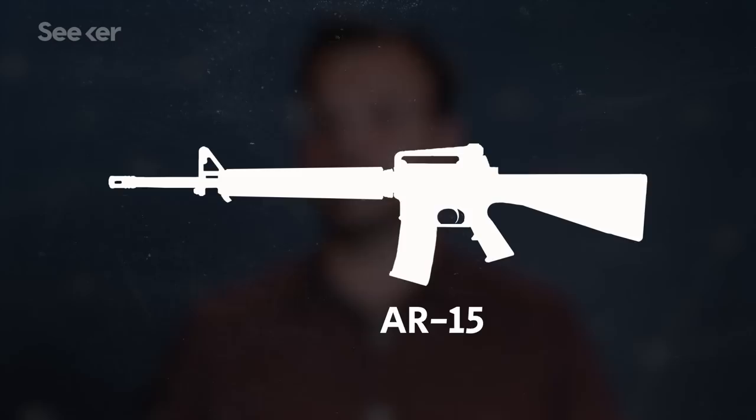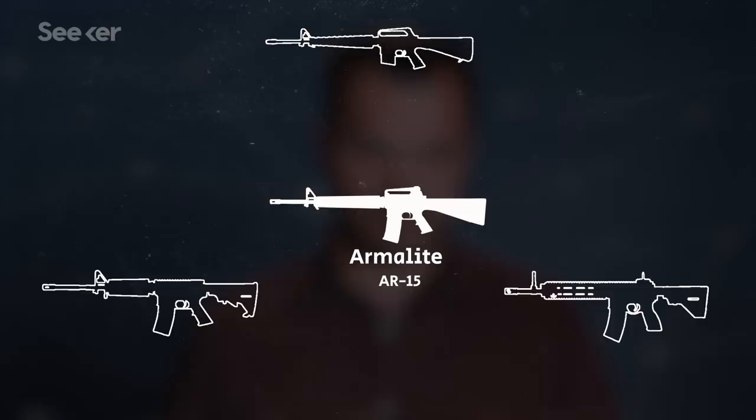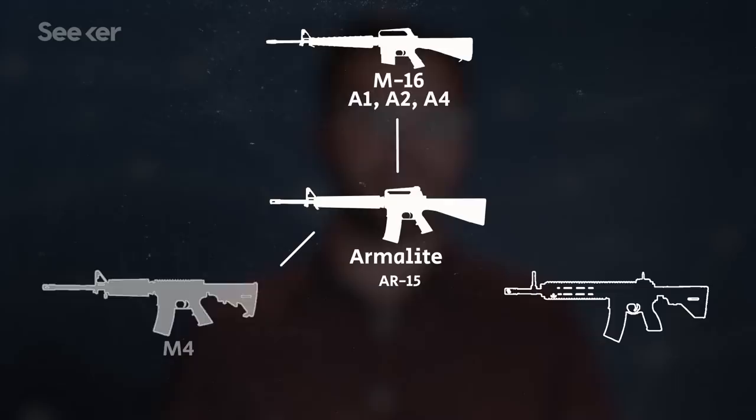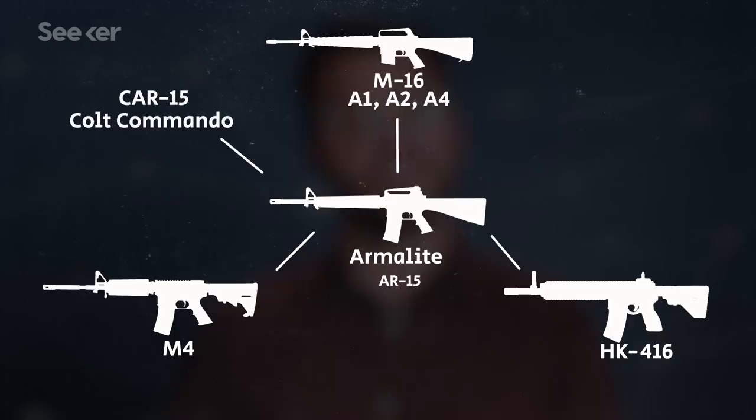People call this the AR-15, but it's part of a family of weapons that are all related to the Armalite AR-15, a gas-operated rifle that the US military adopted in the 1960s. The military named it the M16, and that has variants, the M16A1, A2, and A4. There's also the shorter carbine version, called the M4, or its variants like the CAR-15 or Colt Commando, or versions with different systems and markets like the HK416, Canada C7, or Danish LSV M04.